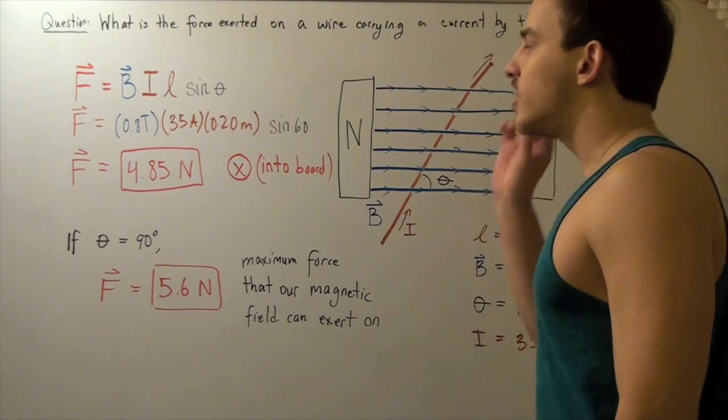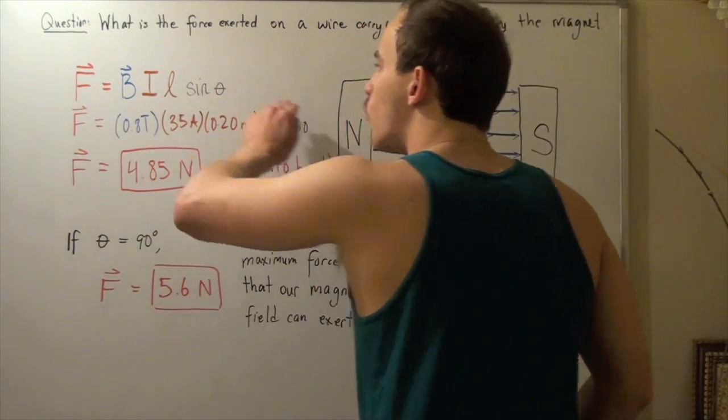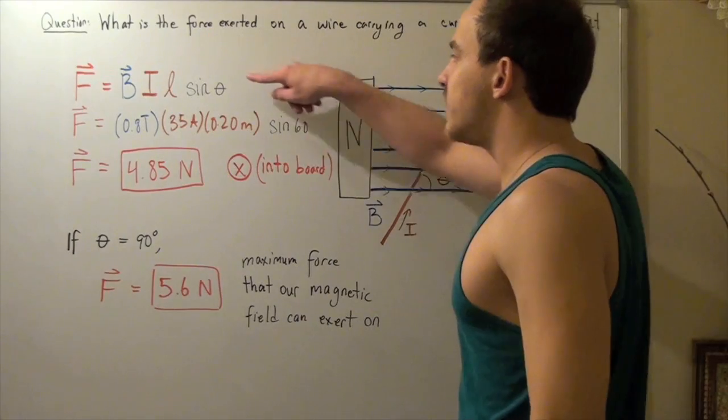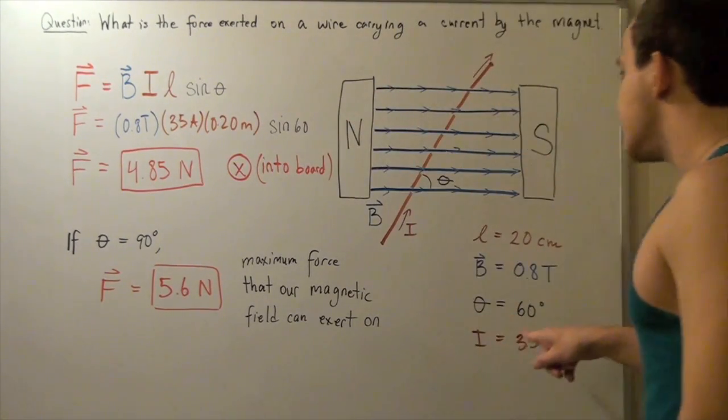So, in this case, we're going to use the following formula. The force equals BIL times sine theta, where the sine theta is simply sine 60.